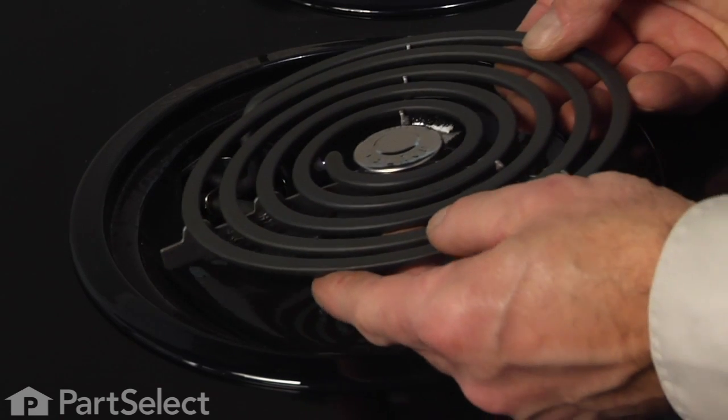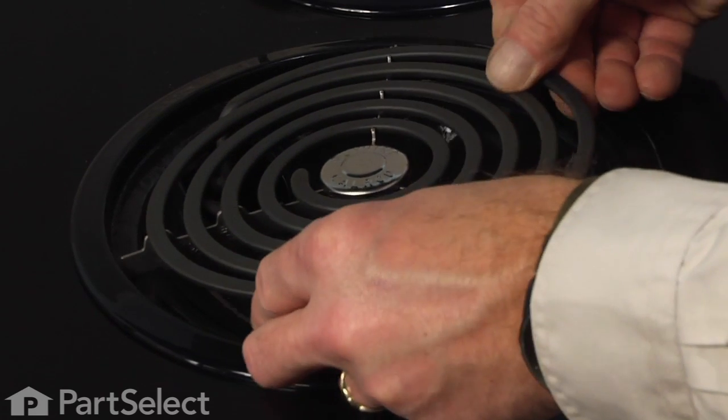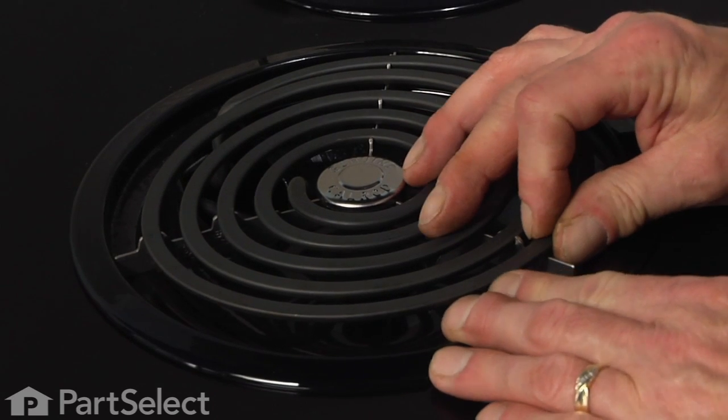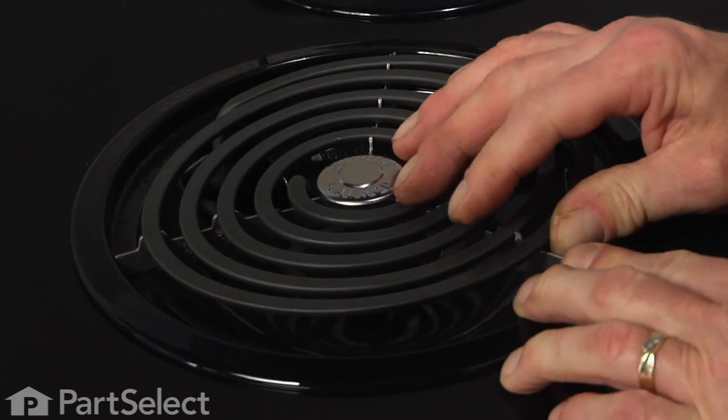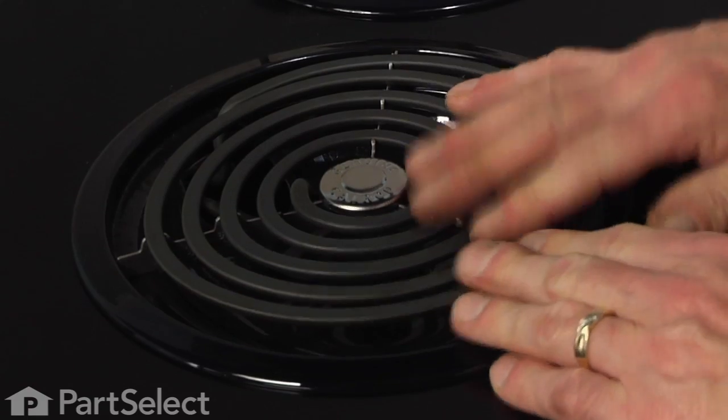Take our new element, make sure the terminals are straight, just tilt the back end down a bit, slide it into the terminal block, and snap it into the drip bowl.